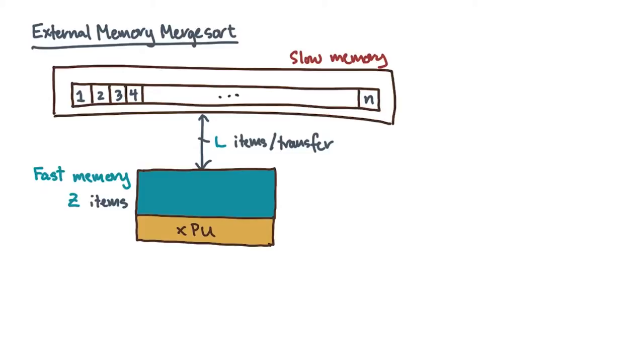Let's now think about the problem of sorting n elements in a two-level memory hierarchy. Initially, let's assume the processor is sequential. Here's a natural scheme based on the merge sort idea.